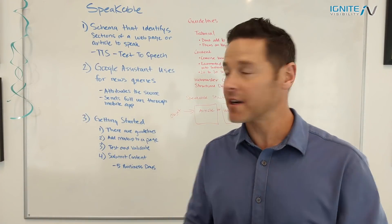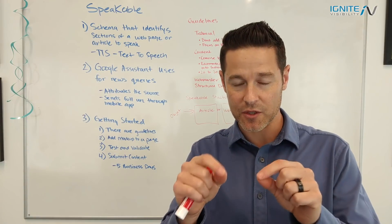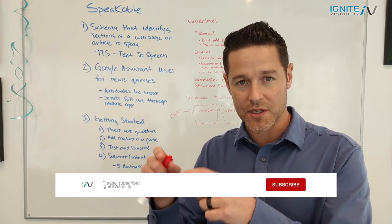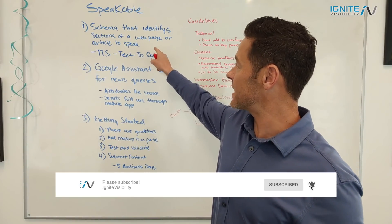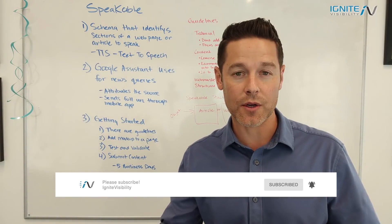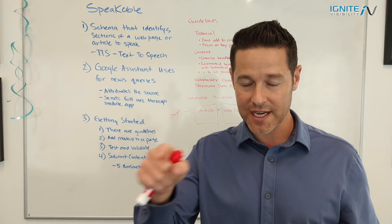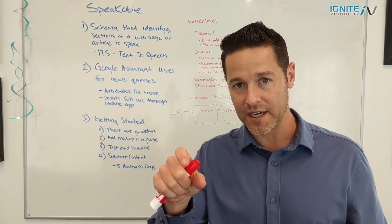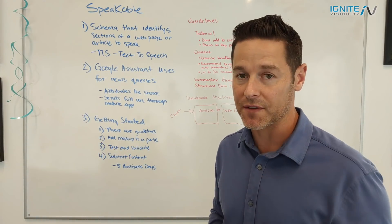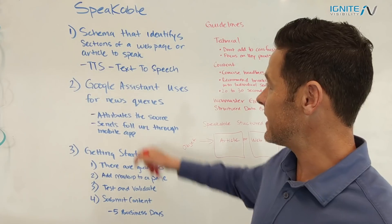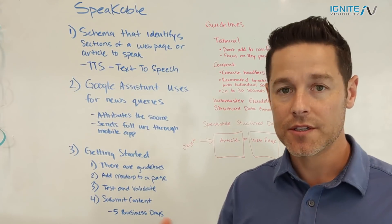Speakable markup is actually schema, which is a type of code that you put inside the code of your website — a little piece of code that will identify sections of a webpage or article to speak to somebody. You can mark up a little piece of text inside of your website's code and that's going to actually speak it to somebody. That's called TTS, which stands for text to speech.